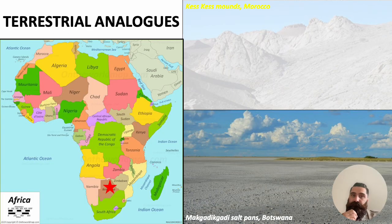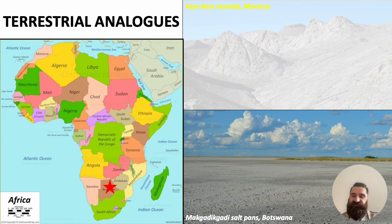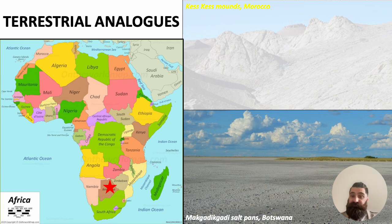Now I want to take you into a completely different environment. We've spoken about cold seeps and black smokers, and now we get into a continental environment — far away from the ocean, in a landlocked country which is Botswana. This environment, which is extreme, is called the Makgadikgadi salt pans.